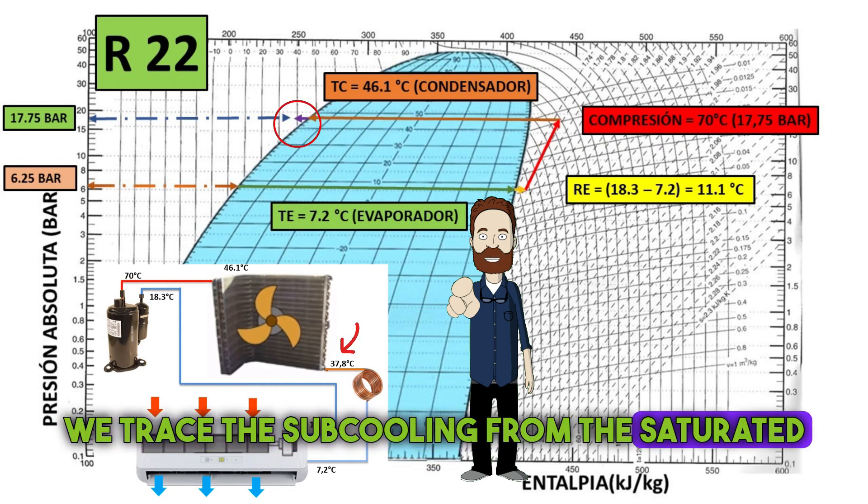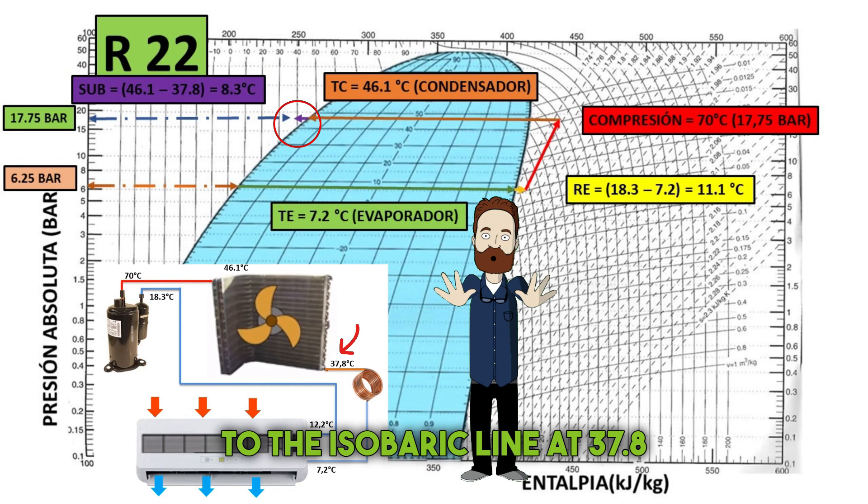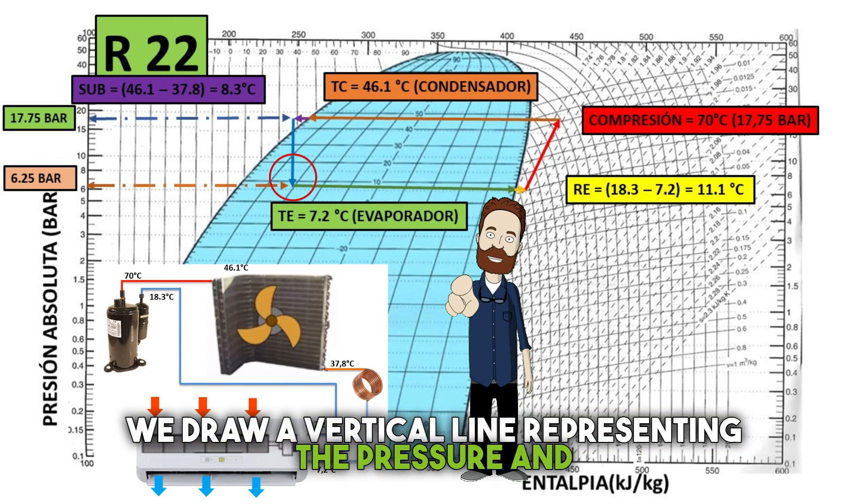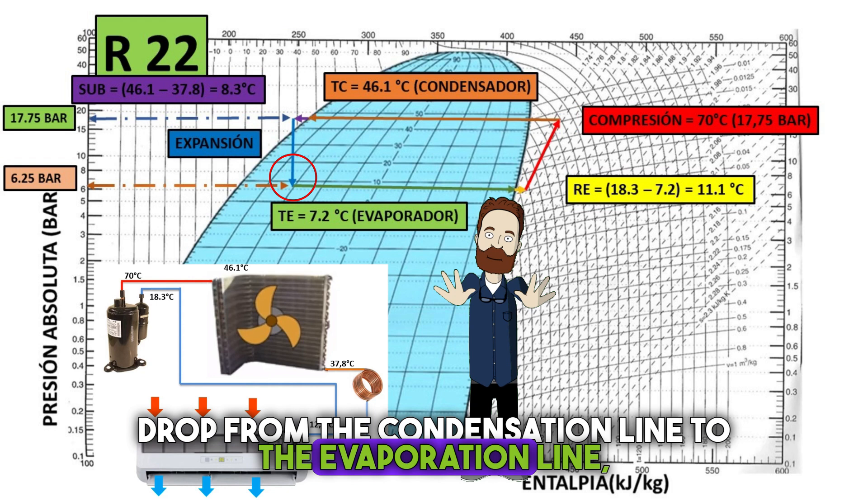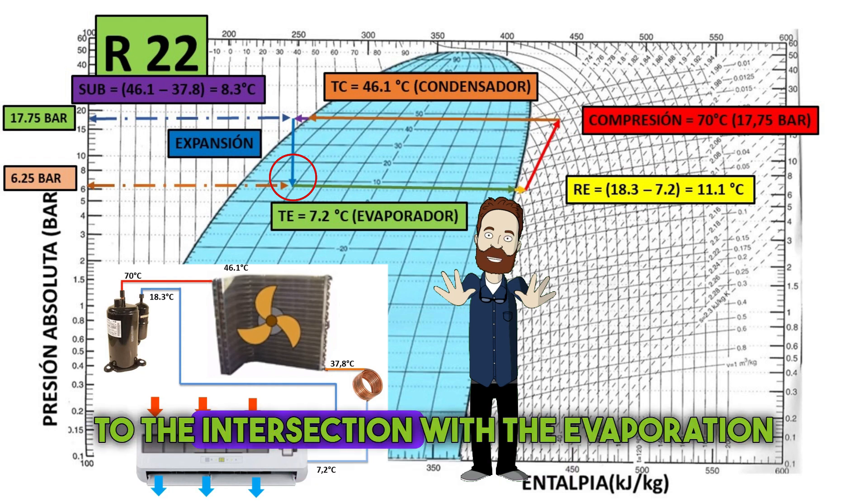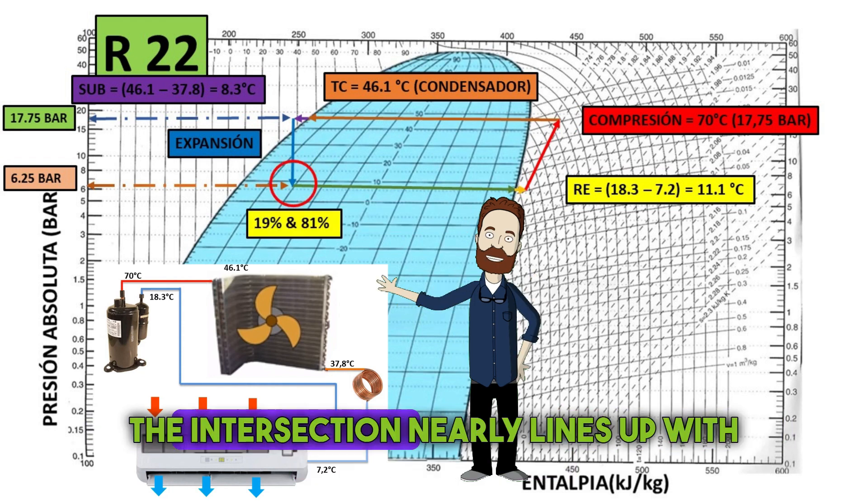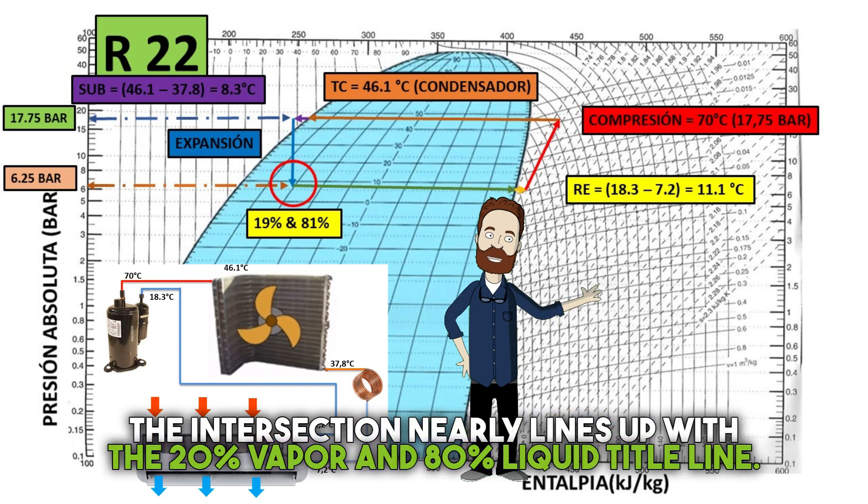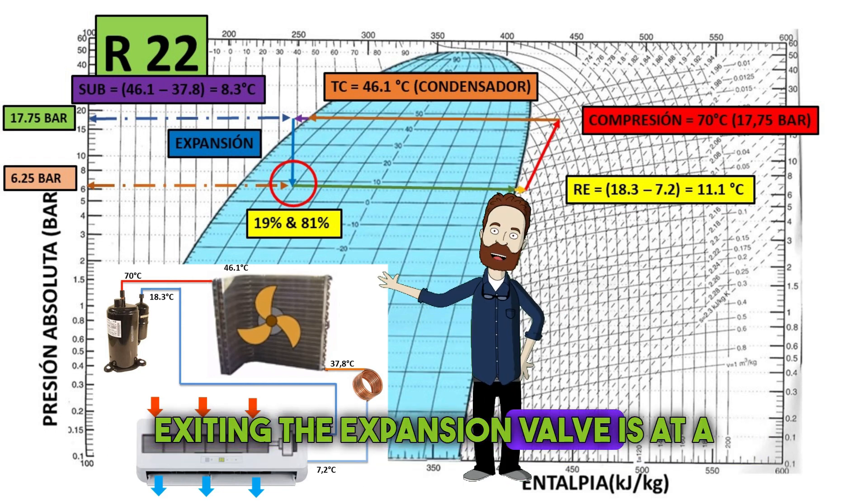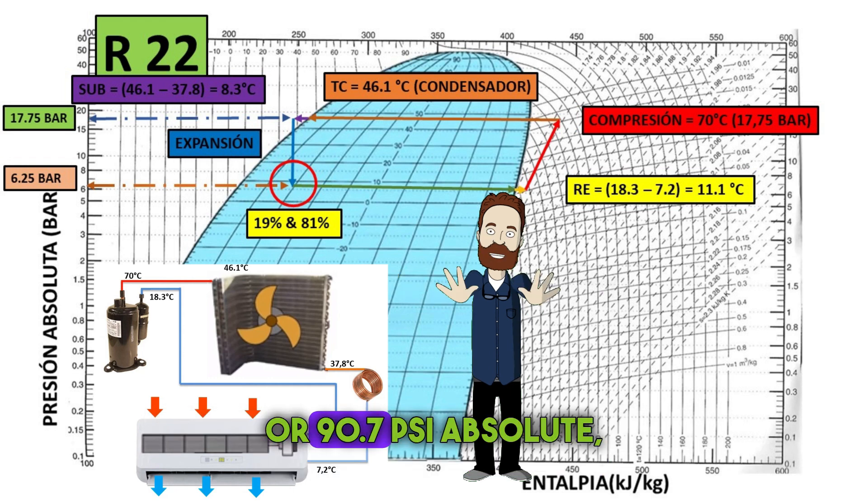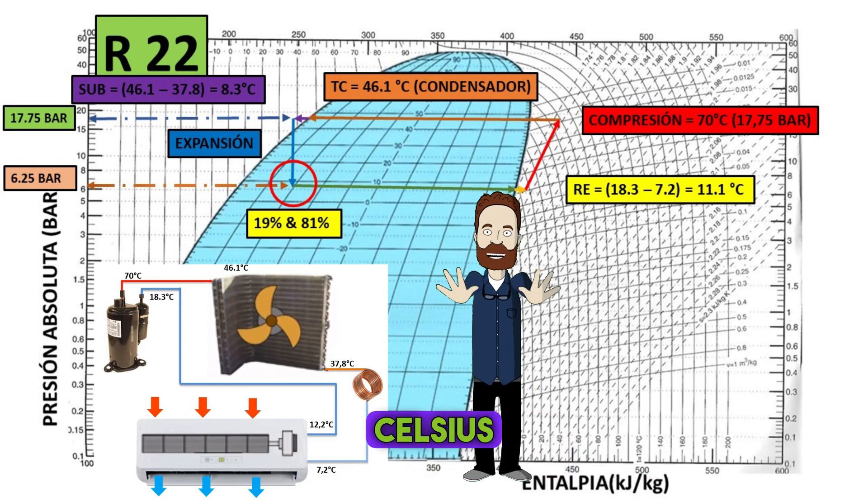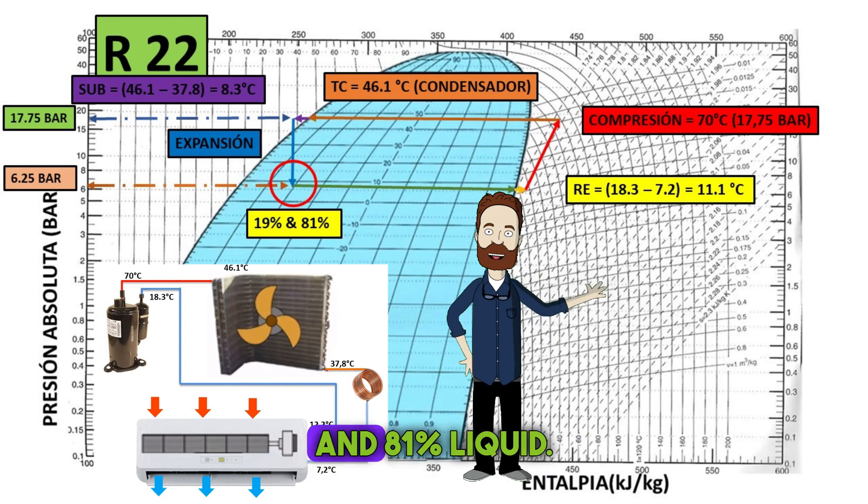We trace the subcooling from the saturated liquid line to the isobaric line at 37.8 degrees Celsius. Finally, we draw a vertical line representing the pressure and temperature drop from the condensation line to the evaporation line, starting from the subcooling point at 37.8 degrees to the intersection with the evaporation line. The intersection nearly lines up with the 20% vapor and 80% liquid line. We can conclude that the refrigerant gas exiting the expansion valve is at a pressure of 6.25 bars or 90.7 psi absolute, with an evaporation temperature of 7.2 degrees Celsius and a mixture of 19% gas and 81% liquid.